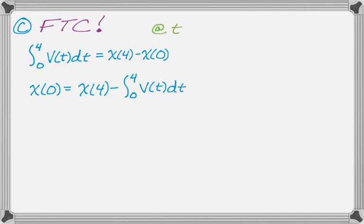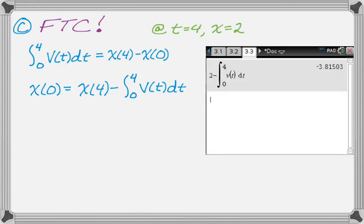And then I'm told in the problem that at t equals 4, the x-coordinate is 2. And now this is a calculator problem. So I'm going to do that. 2 minus the integral from 0 to 4 of v of t dt. I get negative 3.815. So x of 0 is approximately negative 3.815. Not bad.